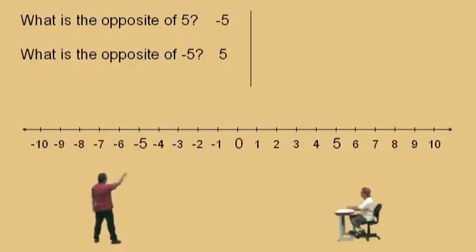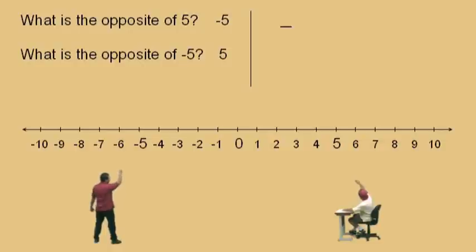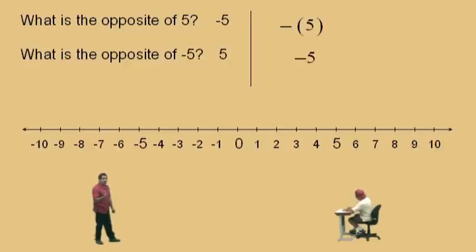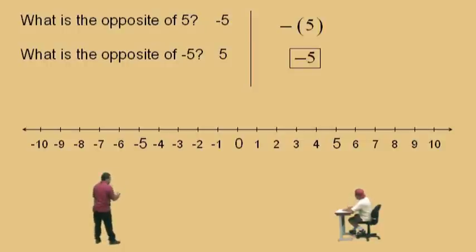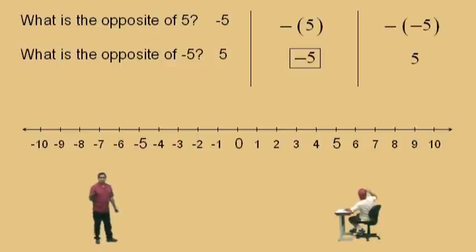Here we have a negative or opposite sign. I'm going to read it as an opposite. That is the opposite of 5. What is the opposite of 5, Charlie? Negative 5. We will soon find out that taking the opposite of a number is just like multiplying a number by negative 1. We'll talk about multiplication with negative numbers in the next video. So the opposite of 5 is negative 5. The opposite of a negative number will always be positive. That's sometimes called the double negative rule.